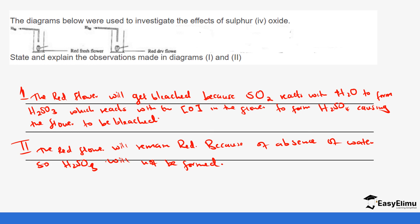That brings us to the end. I hope you have been able to see some of those properties — sulfur dioxide is one of the oxides of sulfur that is commonly tested. Make sure you are able to recognize those reactions and understand the difference between oxidation reactions and reduction reactions. That's it for today, see you in the next lesson.